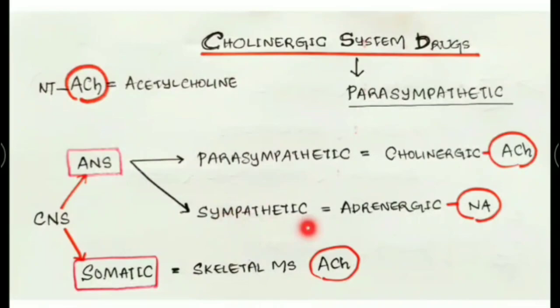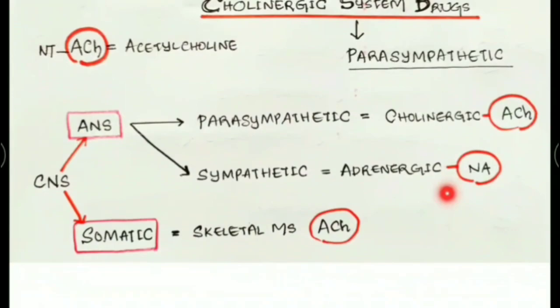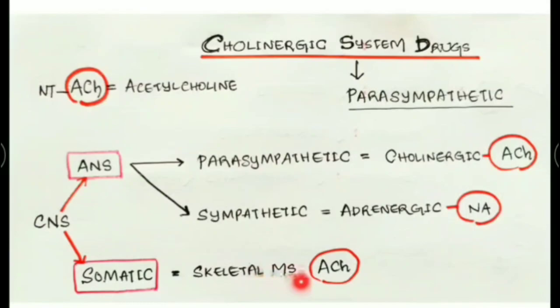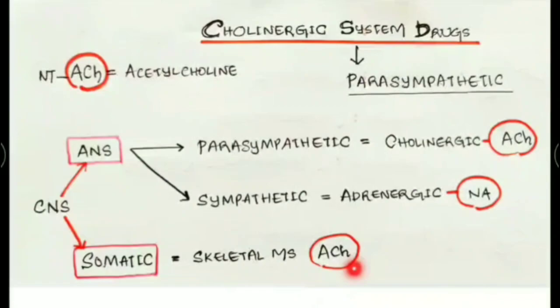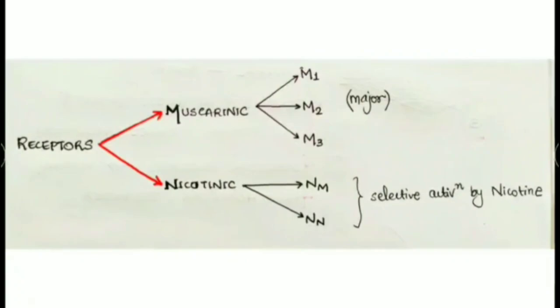The sympathetic is the adrenergic system, with its major neurotransmitter being noradrenaline (NA). In the somatic system, it is concerned with skeletal muscles, and the major neurotransmitter is again acetylcholine.